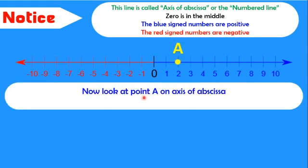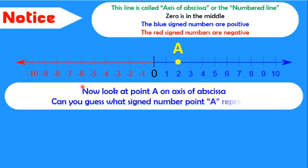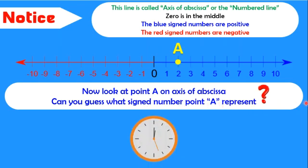Now look at point A on axis of abscissa. Can you guess what signed number point A represents? For sure, A represents the plus 2 signed number, and we call it the abscissa of A. So the abscissa of A is plus 2.